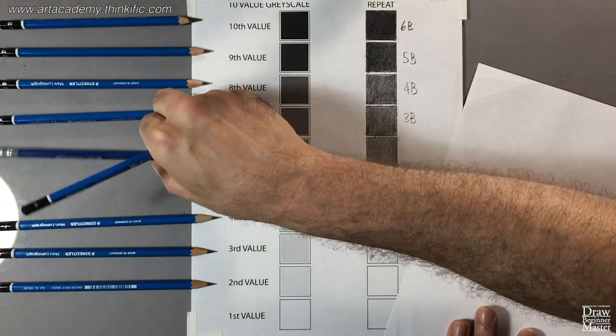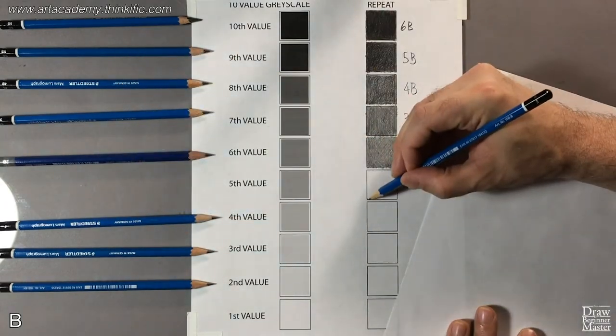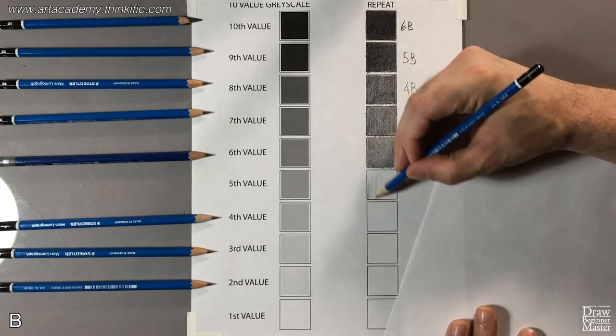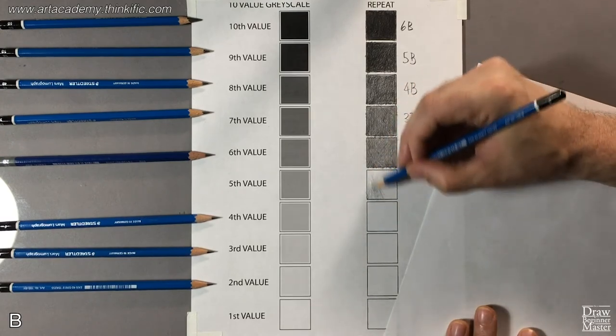For fifth value, I'm going to use a B lead. It's a hard lead, so do your best to keep the value consistent, and for those of you who are just learning shading, don't be afraid to experiment a little.